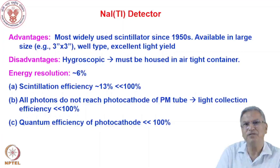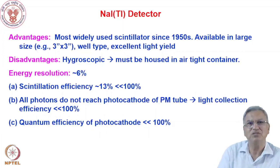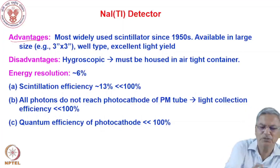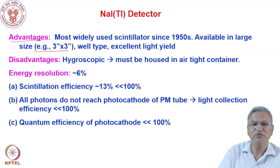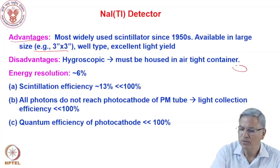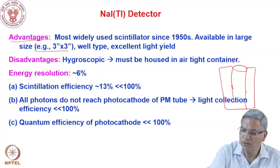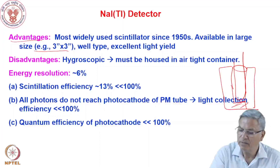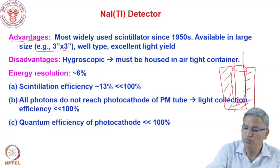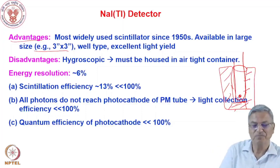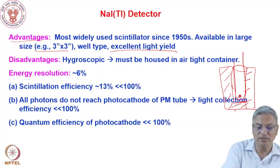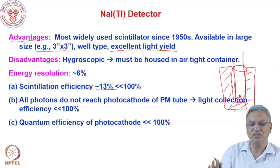NaI(Tl), though not having very high scintillation efficiency, is still the workhorse of gamma counting. It has been widely used since the 1950s and is available in large sizes — 3 inch by 3 inch and even 5 inch by 5 inch. You can machine it into a well-type geometry where a counting tube is inserted into the well, giving almost 100% geometric efficiency. It has excellent light yield — about 13% — and the resolution is about 6%. However, it is hygroscopic, so it must be hermetically sealed in an aluminum casing to prevent moisture ingress.